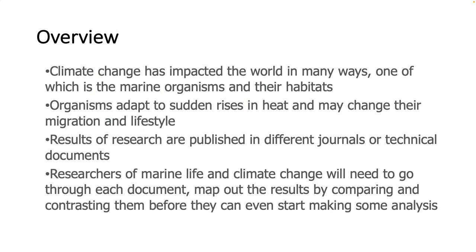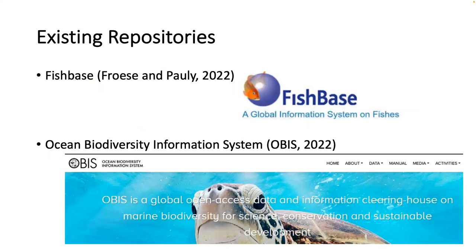The problem is that should scientists want to analyze these data, they will have to read through all of it, map out all the comparisons, and track changes over time because of the effects of climate change — making analysis very difficult. There are already existing repositories like FishBase and the Ocean Biodiversity Information System, but most of these are just about marine creatures, not including effects of climate change or global warming.